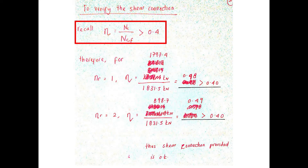Once the reduced compressive force NC and the concrete compressive force at full shear connection NCF have been determined, we can substitute the values into the main equation highlighted in the red box. The degree of shear connection — the ratio of NC to NCF — for one row is determined to be 0.98, which is larger than the required value of 0.4. For two rows of shear connectors, the degree of shear connection is 0.49, which is also larger than 0.4. Therefore, both one row and two rows satisfy the requirement.